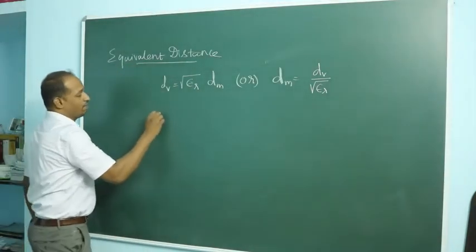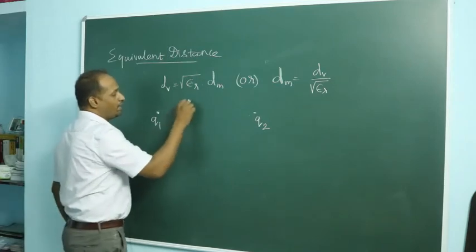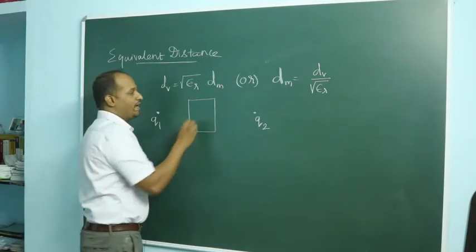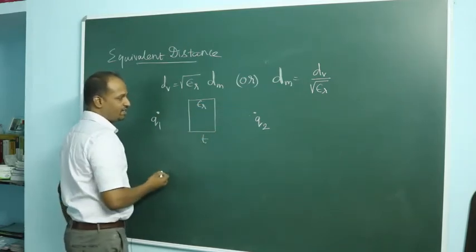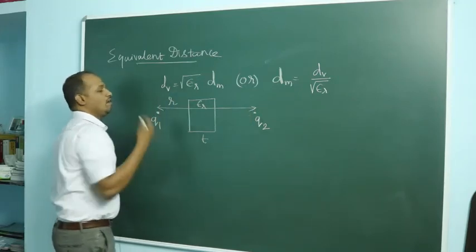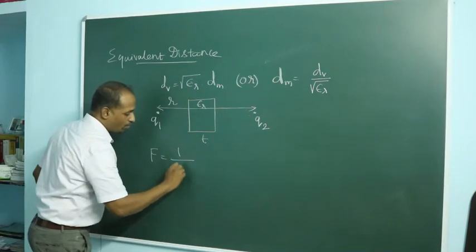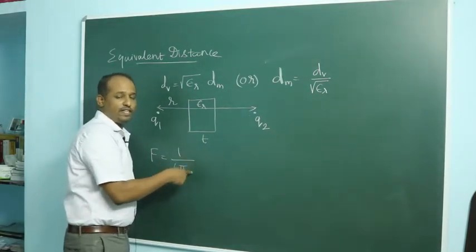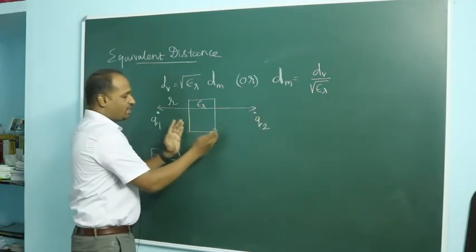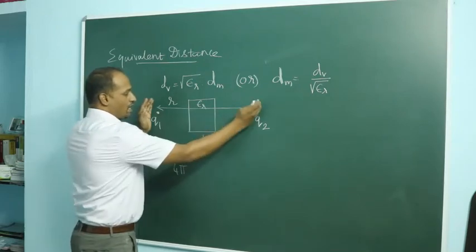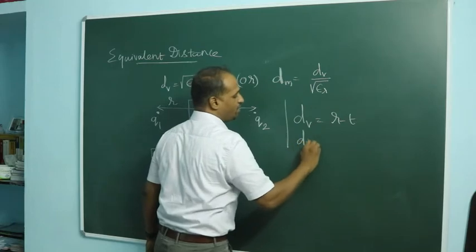Where and how is this applied? Suppose we have charge q1 separated from q2 by some distance, but a medium of dielectric constant k (which is epsilon r) comes in between. If its thickness is t and the total distance between the two charges is r, what is the force between them? The vacuum distance alone is r minus t, and the medium distance is t.